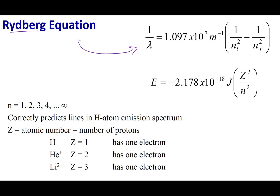What you should note with the hydrogen atom is that there is one electron. So what Rydberg did is try to expand it to one-electron scenarios. What I mean by that is if I take helium, which has two electrons, and I remove one electron to get helium plus, I have one electron.